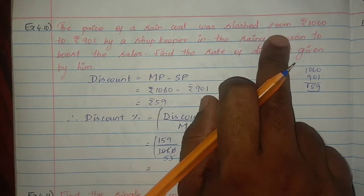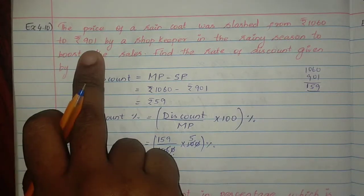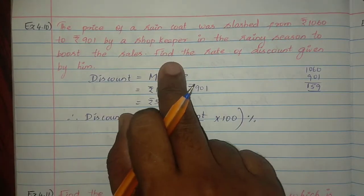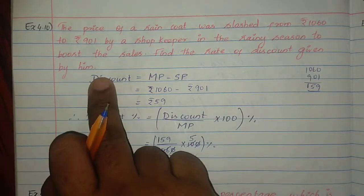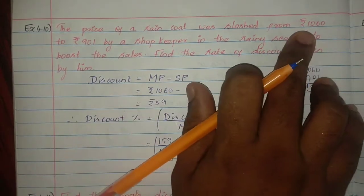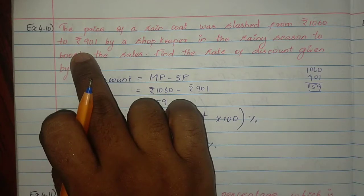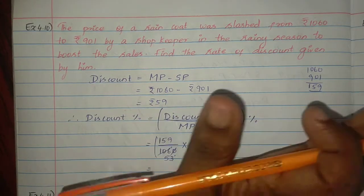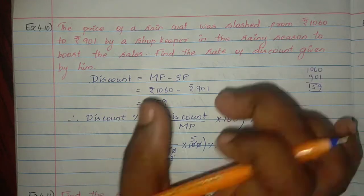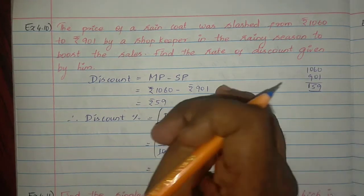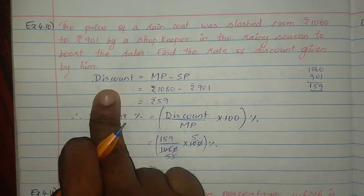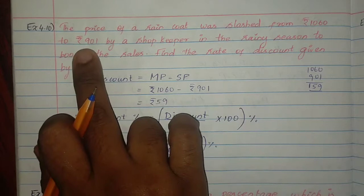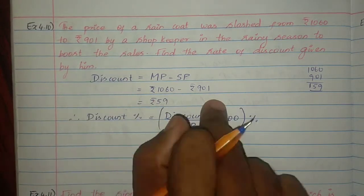The price of a raincoat was slashed from Rs. 1,060 to Rs. 901 by a shopkeeper in the rainy season to boost sales. Find the rate of discount given by him. So the marked price is Rs. 1,060 and the selling price is Rs. 901. The discount formula is: Market Price minus Selling Price, which gives 1,060 minus 901.